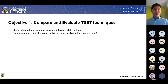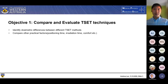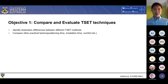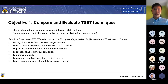This brings us to Objective 1: to compare and evaluate the different techniques. There are quite a number of different techniques, and they are not standardized per center. I want to investigate and determine the dosimetric differences between these techniques — for example, the underdosed and overdosed areas — as well as other practical factors including positioning time and comfort. This is based on the guidelines set by the European Organization for Research and Treatment of Cancer, or the EORTC.